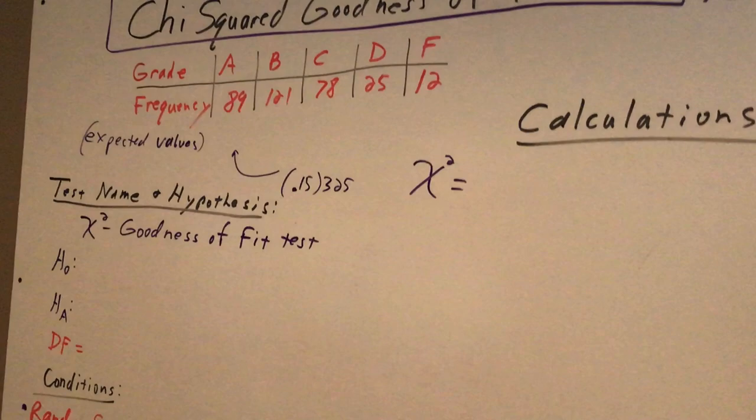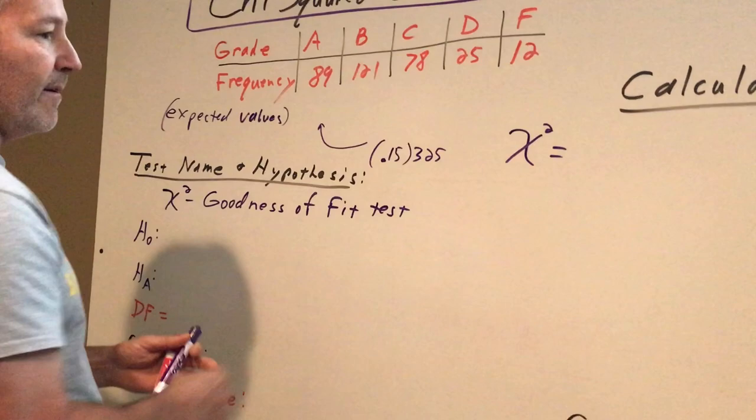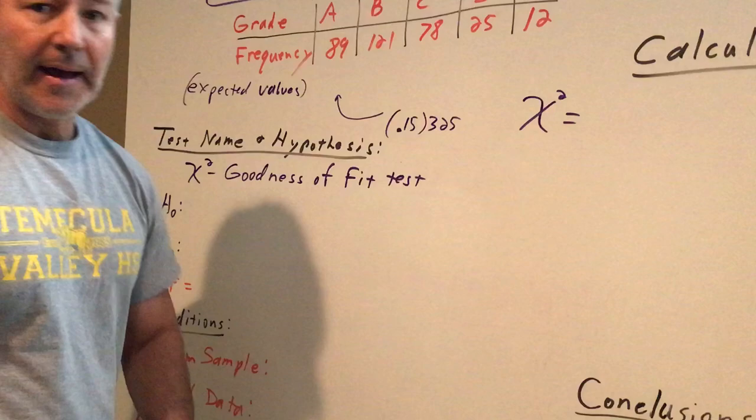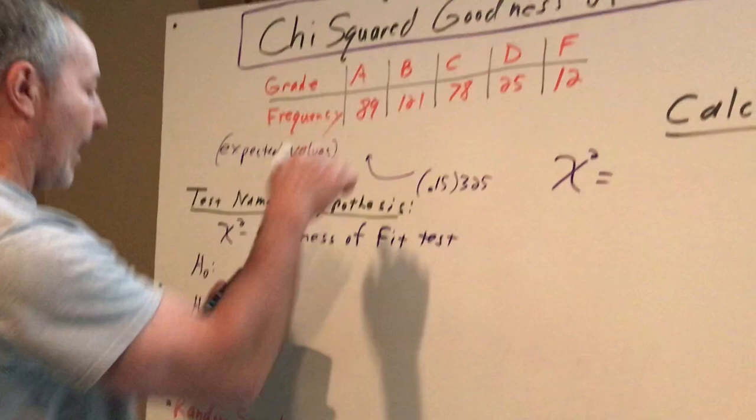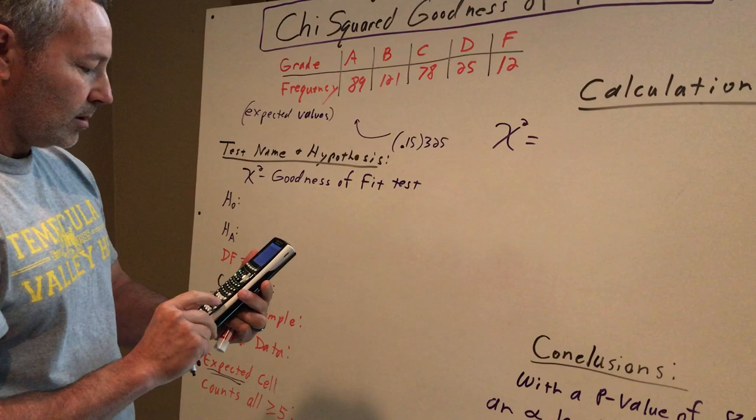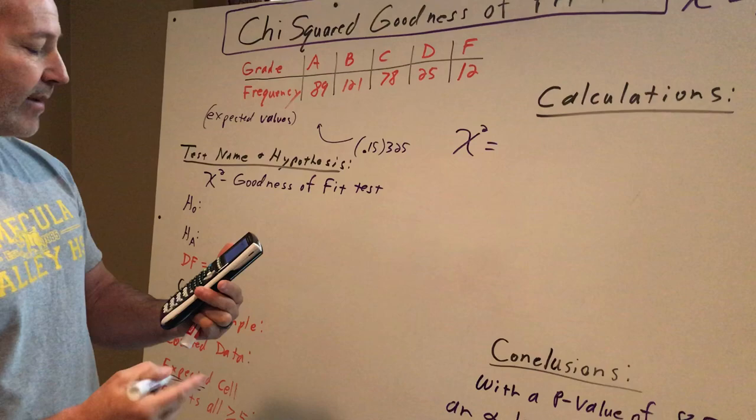So the A's are 15%, so 15% of 325 is what we'd expect. It's also important to note that your expected values are often not integers. These must be counts, but our expected values are not.